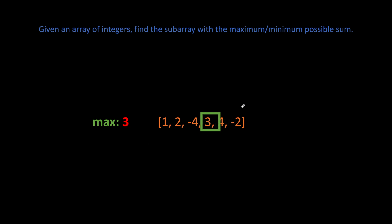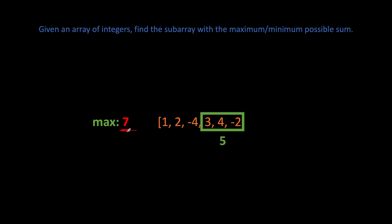At the next index, our sum is three — the same as our global max, so we do nothing. Continuing to expand our sum window: three plus four gives seven, and we've successfully found a new global max. Adding more elements, the new local sum is five, which is less than our global max, so we do nothing. And there we have our global maximum possible sum. We can return either the value itself or the subarray. That is how simple Kadane's algorithm is.